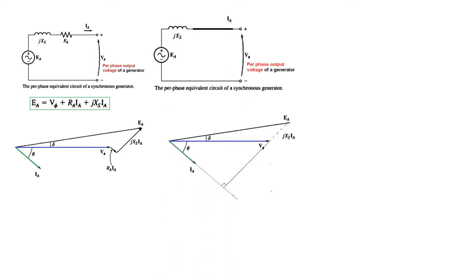If the resistive element is zero, that part drops out. To draw the phasor diagram in this case, we extend the current line, then from the EA phasor we draw a perpendicular onto this line. We extend by the amount of the reactive element drop, and wherever it ends we connect with the origin — that gives EA.